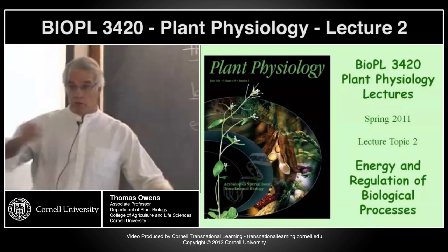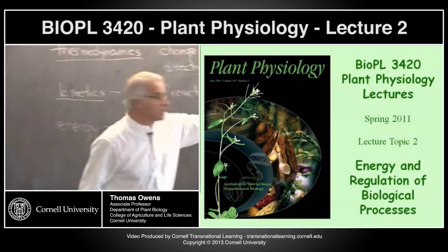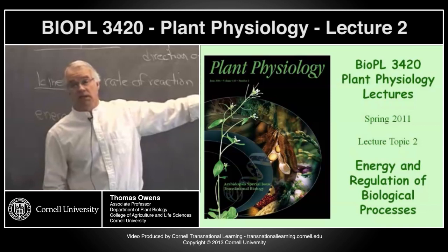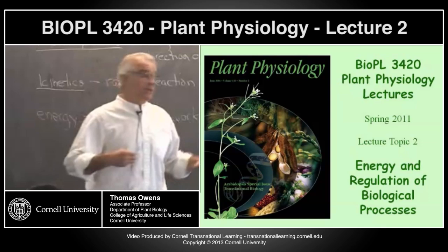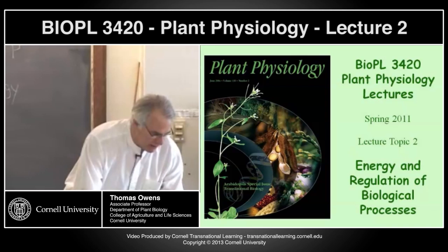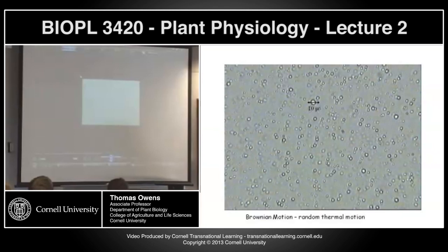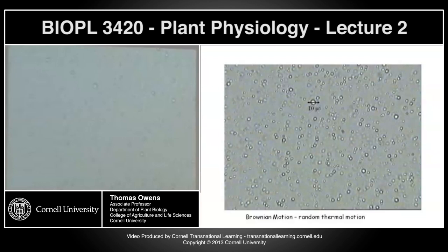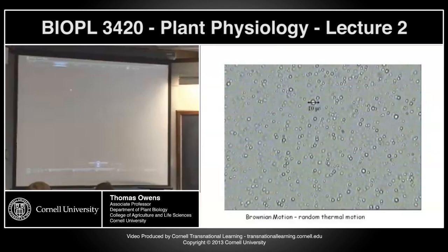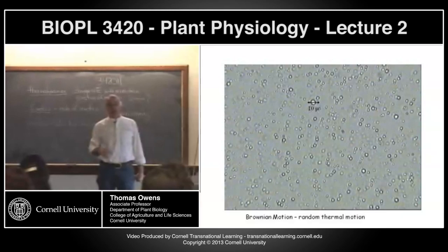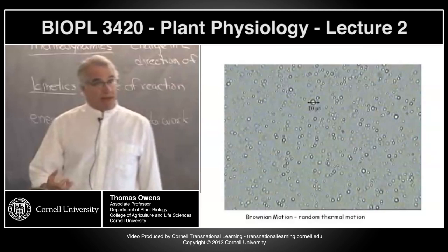We call it thermal energy because it's related to temperature. If we turn the temperature up, the motion of the molecule — whether translation, rotation, or vibration — increases. With modern atomic force microscopes, we're starting to literally visualize thermal energy. But it's a lot easier to see the effect of thermal energy on small particles — that's Brownian motion. Here's a little video of Brownian motion: tiny oil droplets about a micron in diameter, jiggling around. What's making those oil droplets jiggle? The movement of the water molecules around them — translating, rotating, and vibrating — bumping into those droplets.